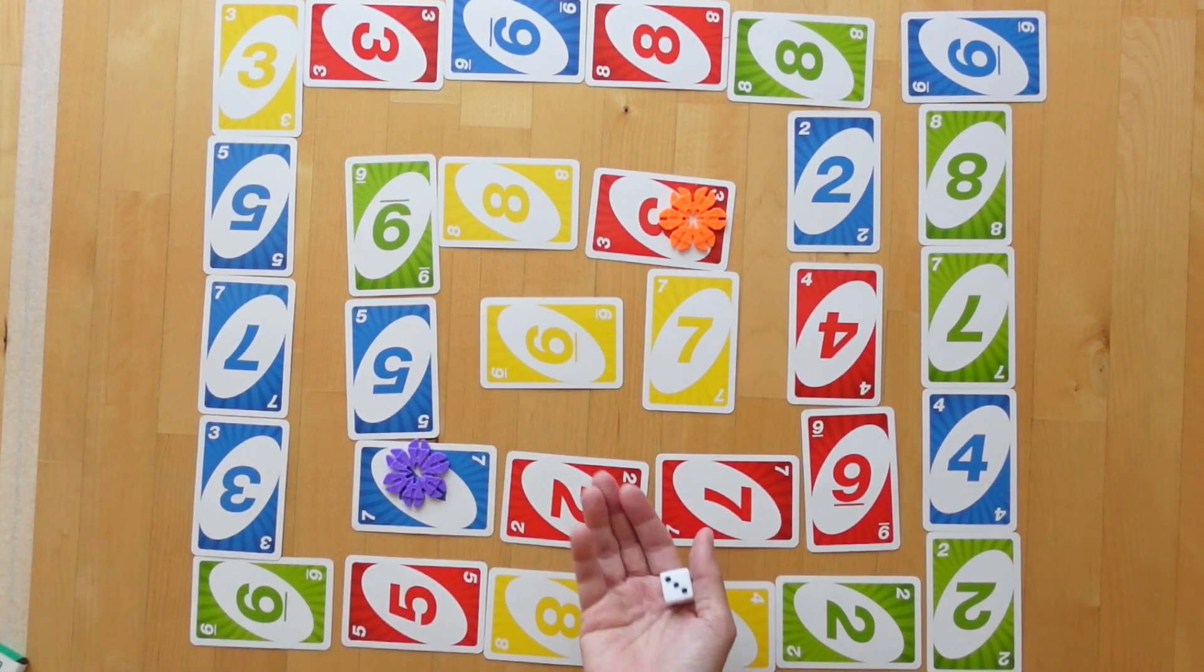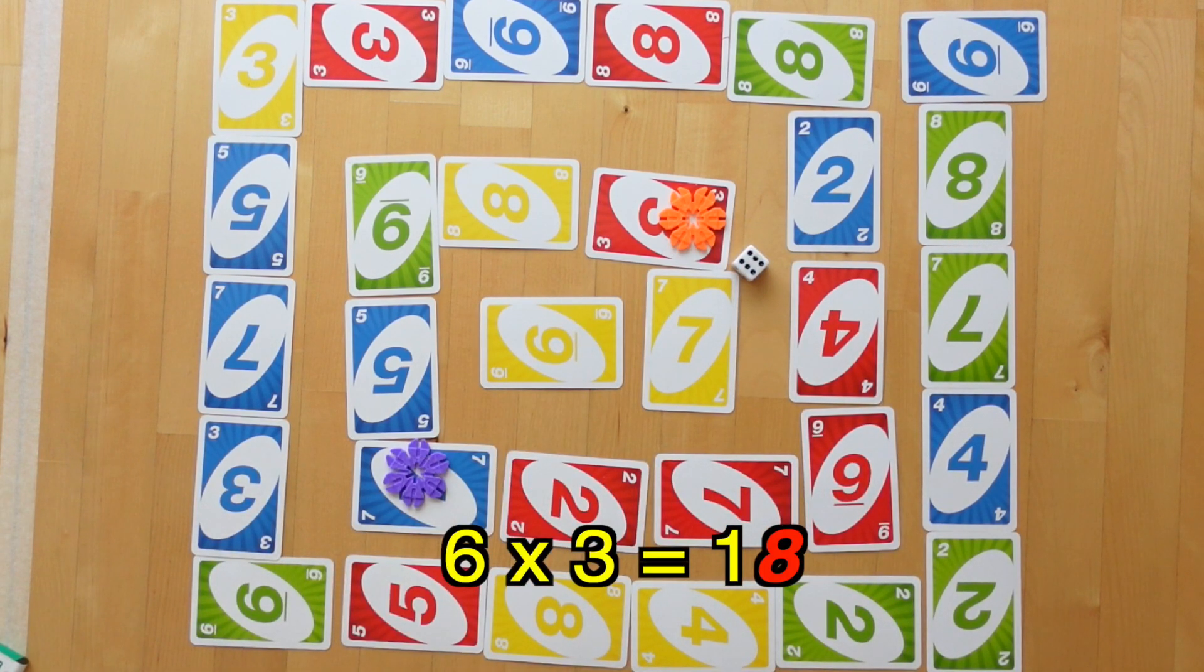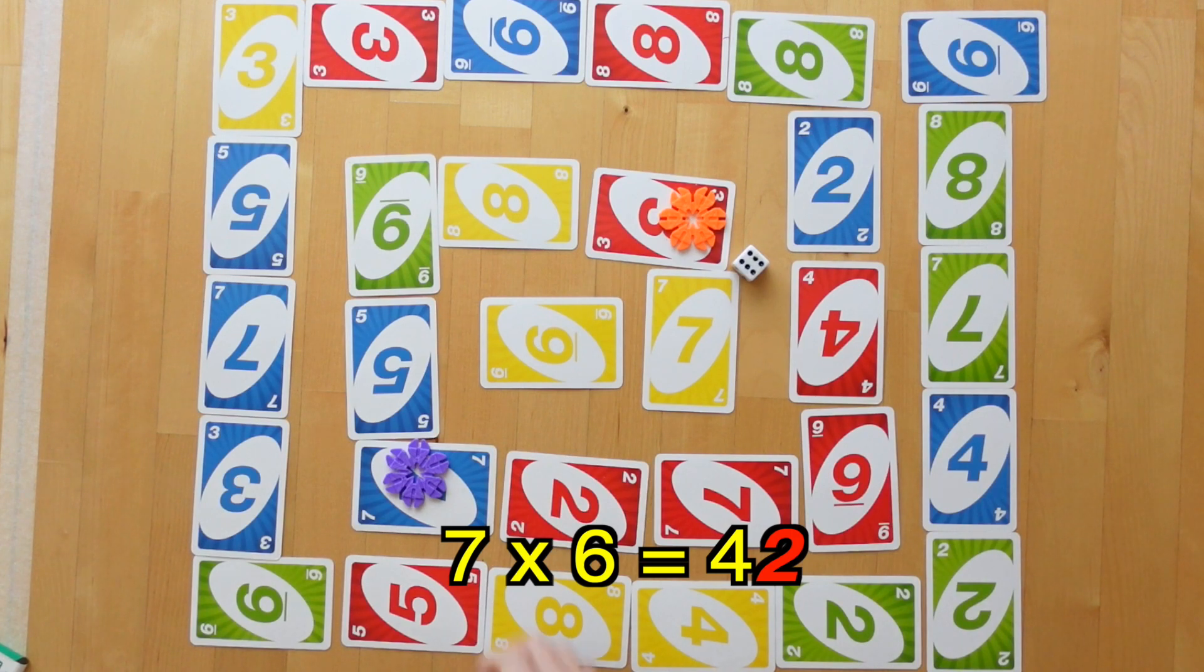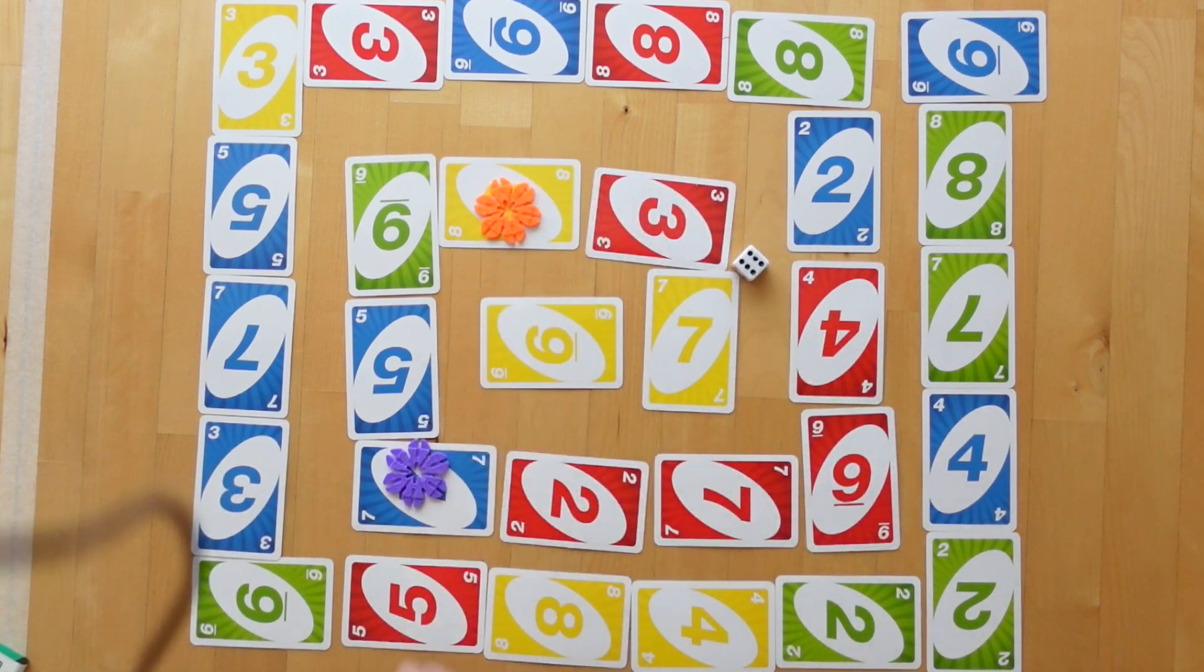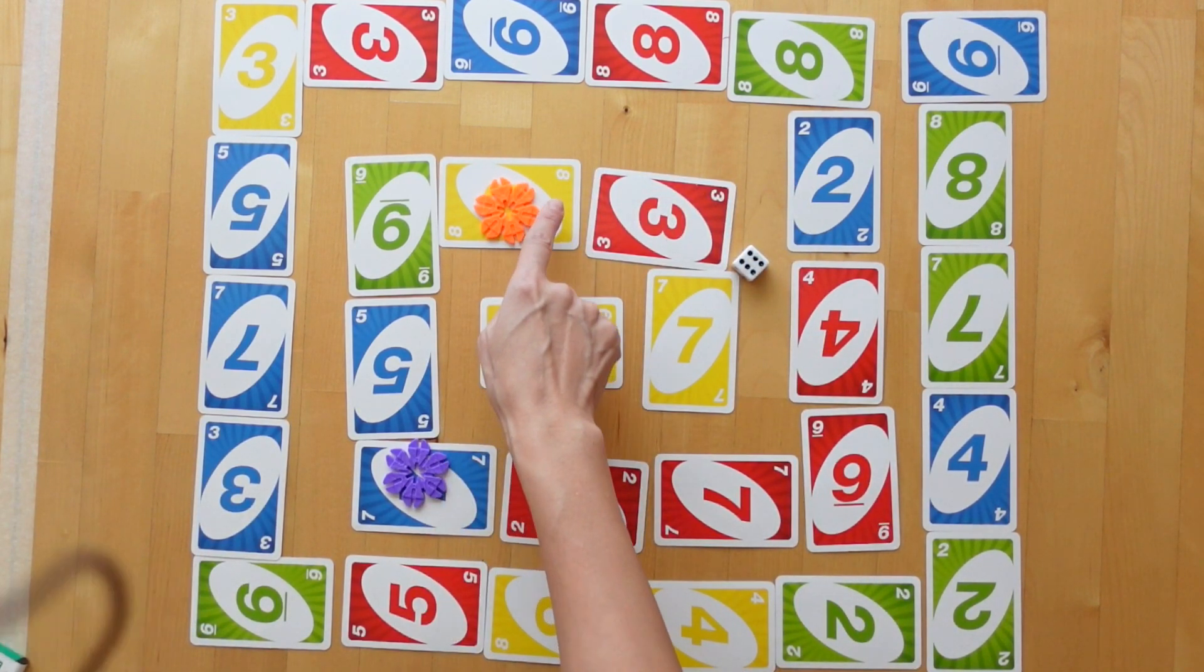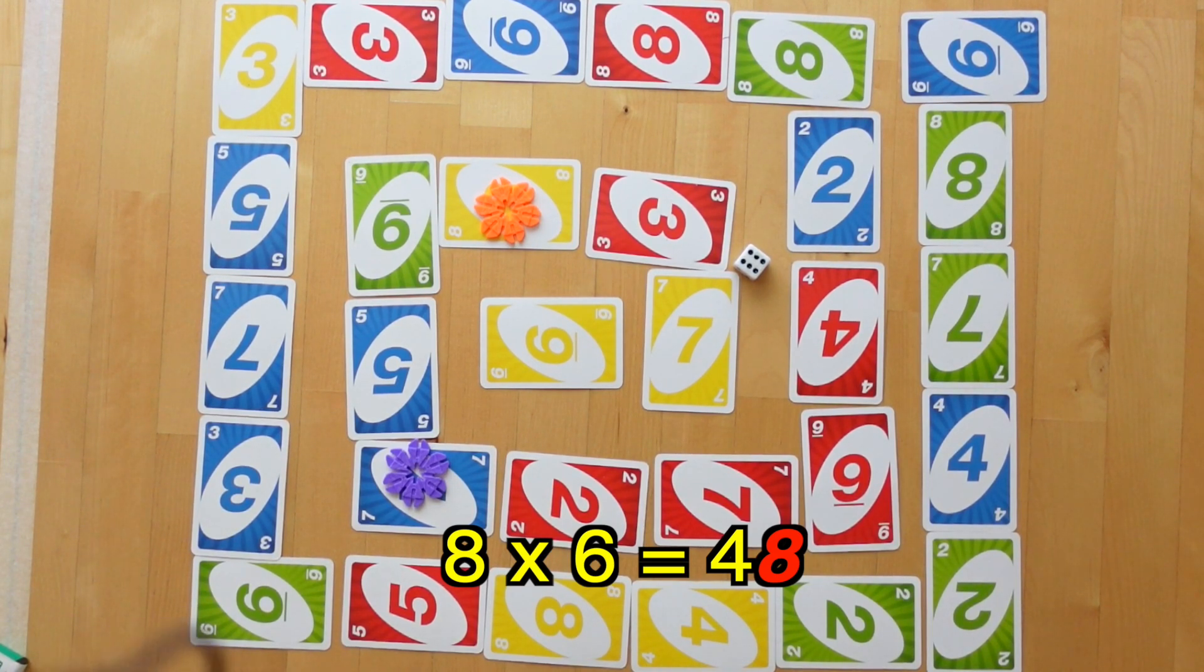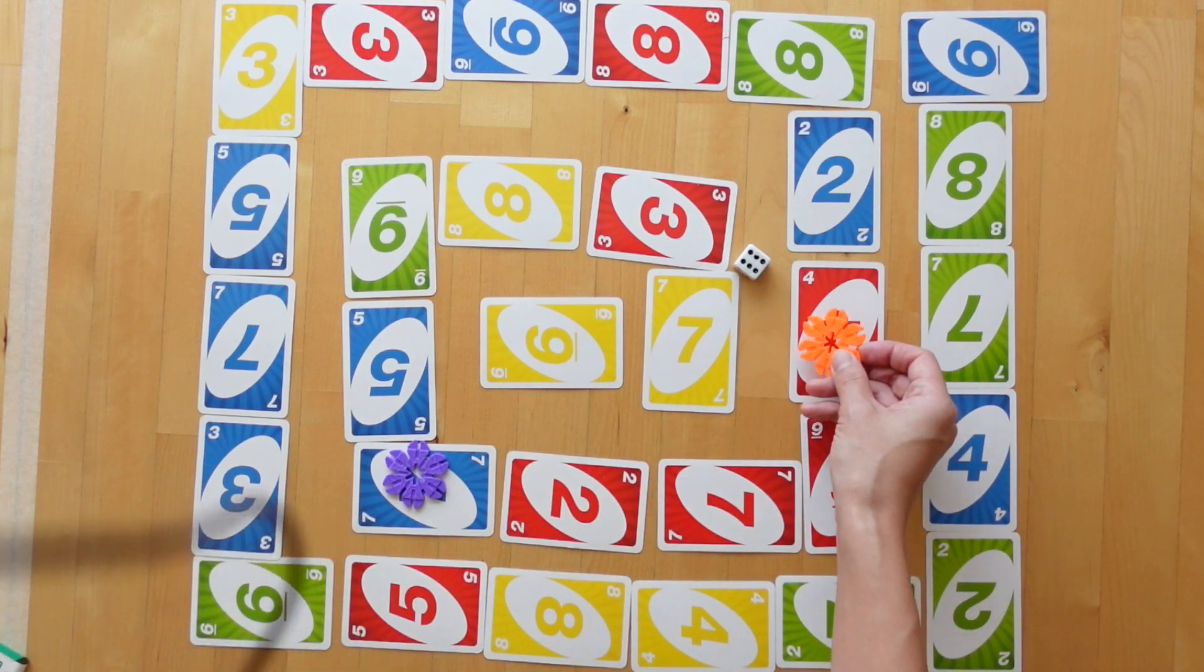Then it's orange player's turn. 6 times 3 is 18. 7 times 6 is 42. And 8 times 6 is 48. So she will start here and move 8 spaces because 8 times 6 is 48 and there is 8 in that ones place. So she can move 1, 2, 3, 4, 5, 6, 7, 8.